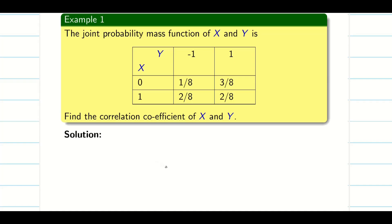You will be given a table. We have to find the correlation coefficient, which is equal to covariance of X,Y divided by sigma X times sigma Y.